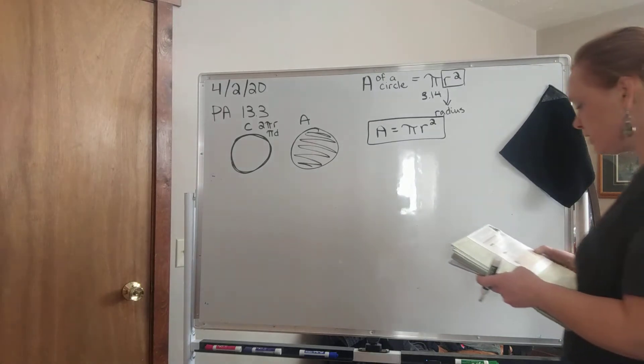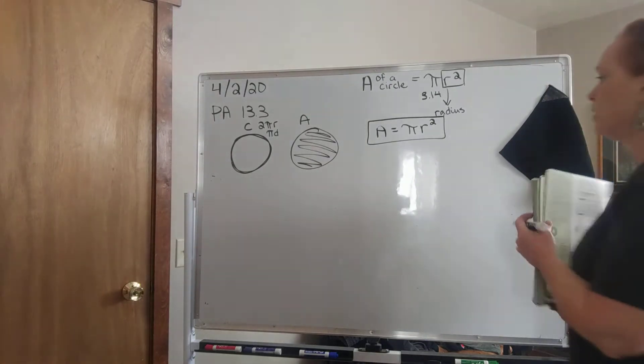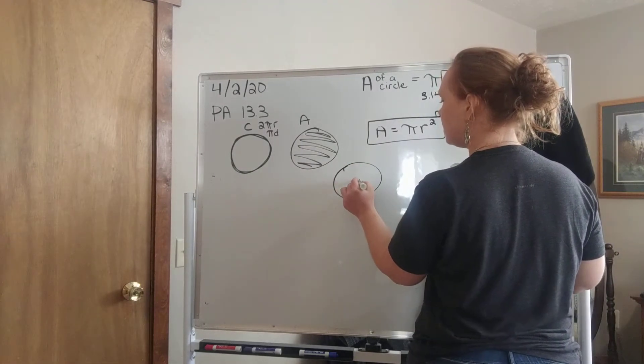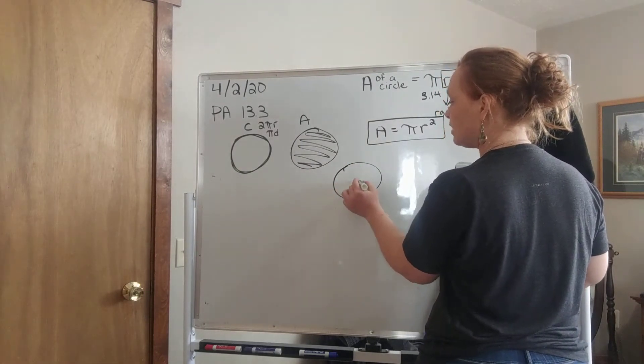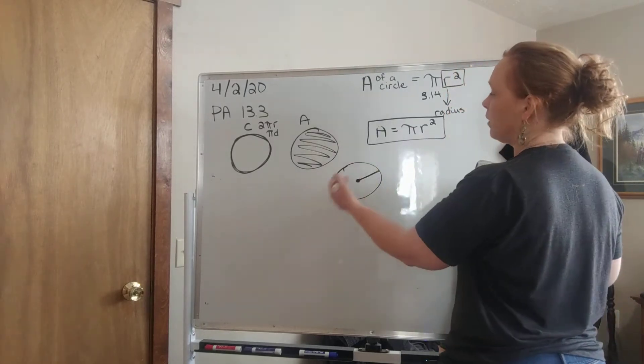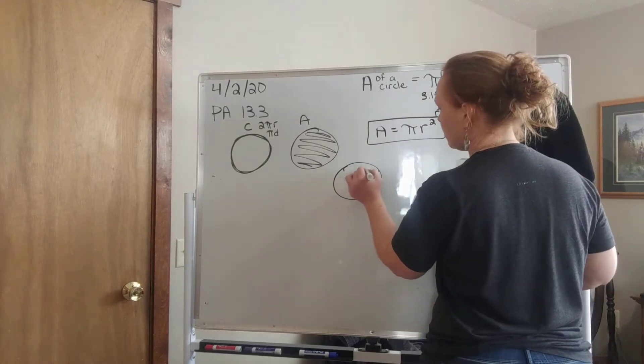Let's jump in and do example one. It says find the area of a circle whose radius is 3 kilometers. So we have our circle, and if you remember, radius is like a sun ray. It starts in the middle and goes to the outside, not all the way across. So it says here that the radius is 3 kilometers.